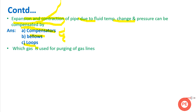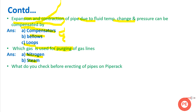The next question is: which gas is used for purging? Purging is done using a gas that approaches ideal conditions. Purging is generally done using nitrogen or steam.